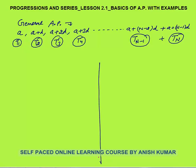Hello, this is progressions and series lesson 2.1. In this I will continue with basics of AP with examples. Here I have written a general arithmetic progression: a, a plus d, a plus 2d, up to a plus n minus 1 into d. You know that a is the first term, a plus d is the second term, a plus 2d is the third term, and so on till the nth term.